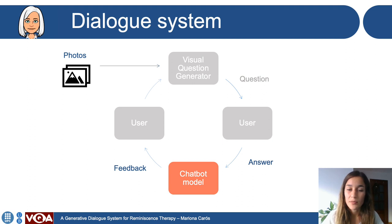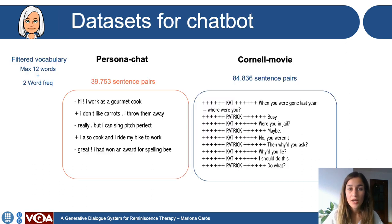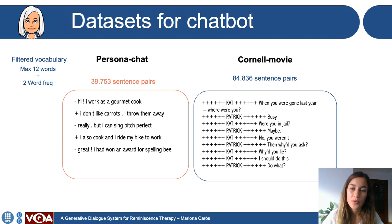Now we will see the chatbot model. It is a sequence-to-sequence model which generates a sequence of words given an input sentence. We want this model to generate feedback on the answer of the user to engage the user in the conversation. We use two datasets to train our chatbot model: the first one is Persona Chat, which contains dialogues between two people that are trying to know each other, and it is complemented by the Cornell Movie Dialogue dataset.